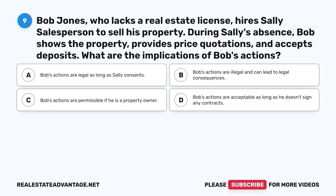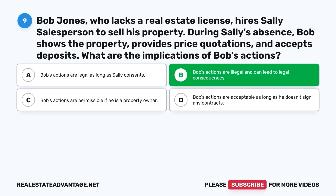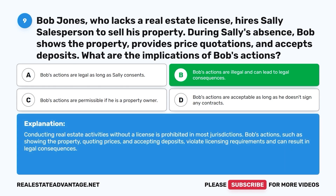Question 9. Bob Jones, who lacks a real estate license, hires Sally's salesperson to sell his property. During Sally's absence, Bob shows the property, provides price quotations, and accepts deposits. What are the implications of Bob's actions? A. Bob's actions are legal as long as Sally consents. B. Bob's actions are illegal and can lead to legal consequences. C. Bob's actions are permissible if he is a property owner. D. Bob's actions are acceptable as long as he doesn't sign any contracts. The correct answer is B. Conducting real estate activities without a license is prohibited in most jurisdictions. Bob's actions — showing the property, quoting prices, and accepting deposits — violate licensing requirements and can result in legal consequences.